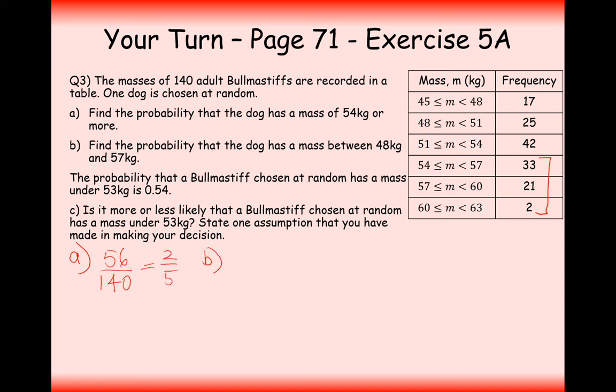Part B is find the probability that the dog is between 48 kilograms and 57 kilograms. So between 48 and 57, that's this amount of dogs here. So it's 25 add 42 add 33. So that's 100 out of the 140 dogs, which is going to give us divided by 140, which gives us 5 out of 7.